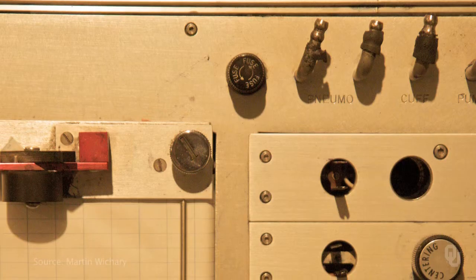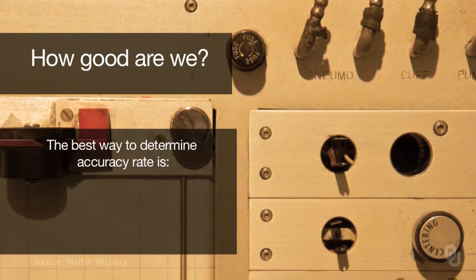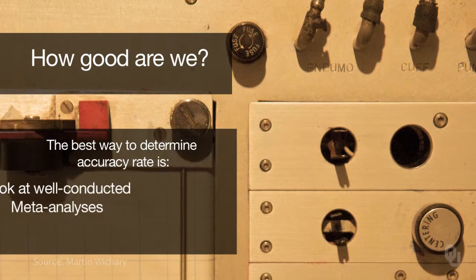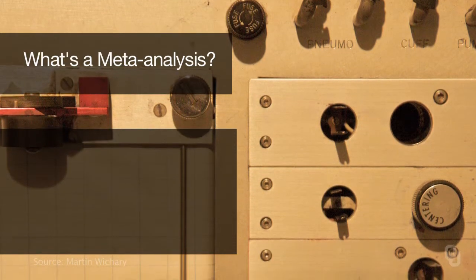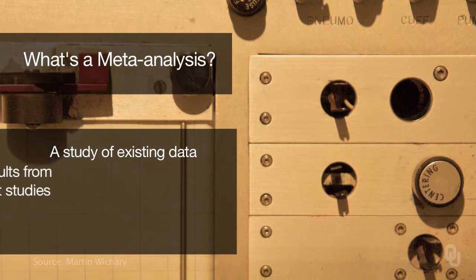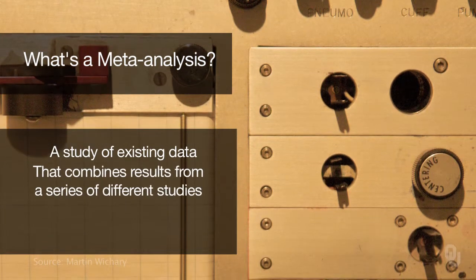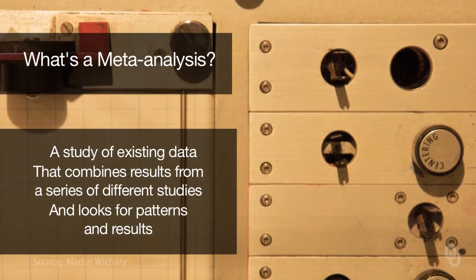Some people call it the Othello error, from the Shakespearean character who thought everybody was lying. So how good are we at detecting deception? The best way to understand accuracy rates is to look at well-conducted meta-analyses — a study of existing data that combines results from a variety of studies and looks for patterns of results across multiple studies.